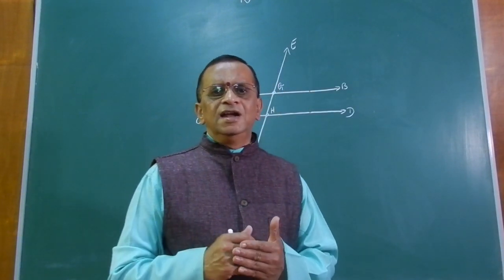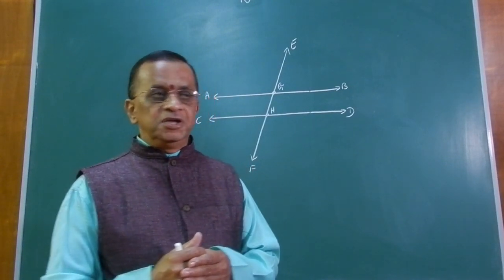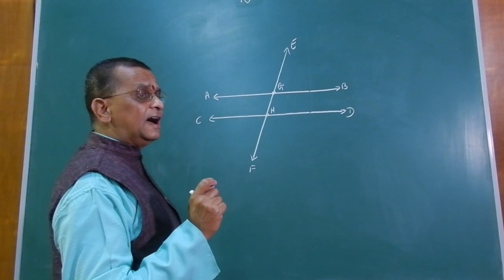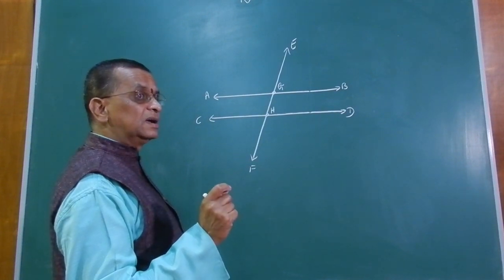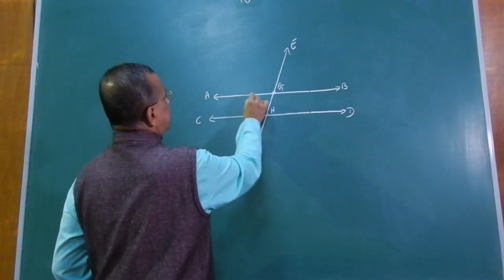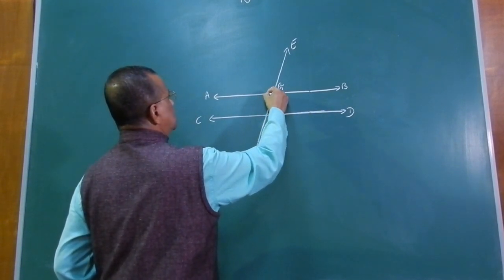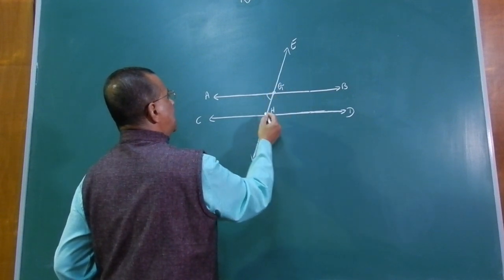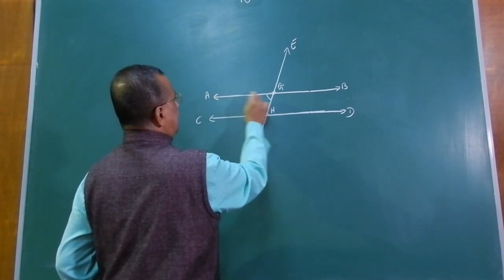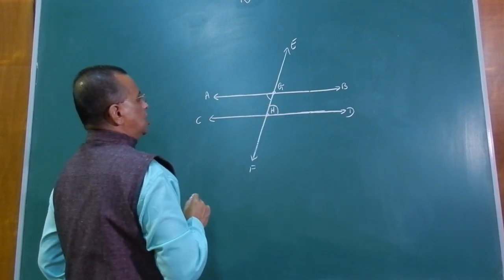Now let us learn about alternate angles. Alternate angles are the angles formed at the corners of the letter Z. Looking at a Z-shape in the diagram, angle AGH and angle GHD are alternate angles.